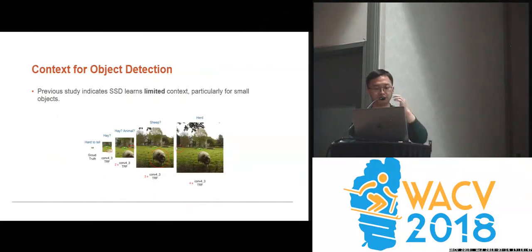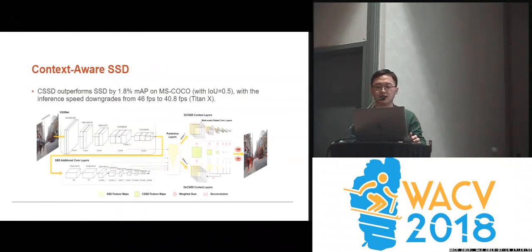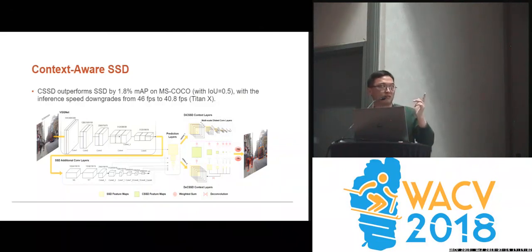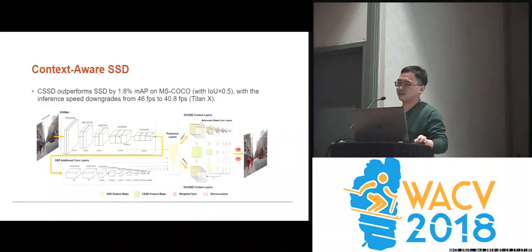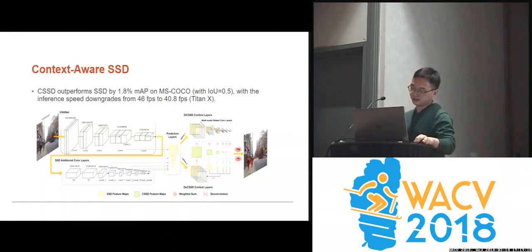So, back to the question: why do we need context? I have made a very clear picture in the paper. Finally, we proposed a Context-Aware Single Shot Detector, in which we use dilated convolutions to integrate context at various layers. We found that our method outperforms the baseline by 1.8 on MS COCO. Feel free to talk to me for more details at the poster session. Thank you.